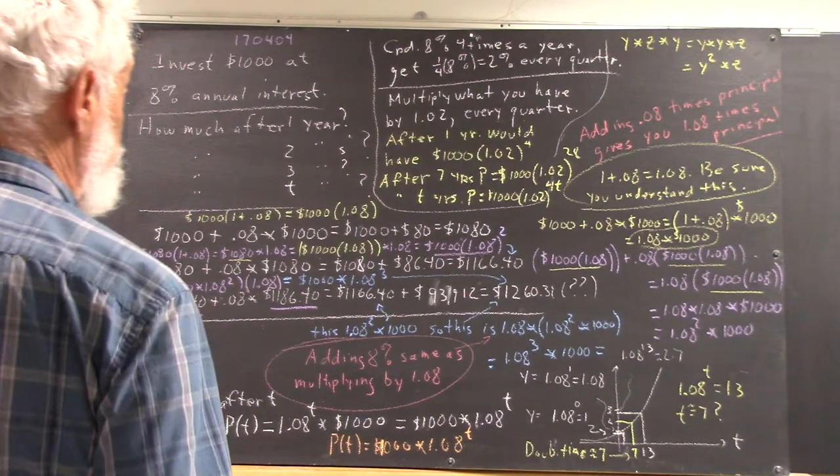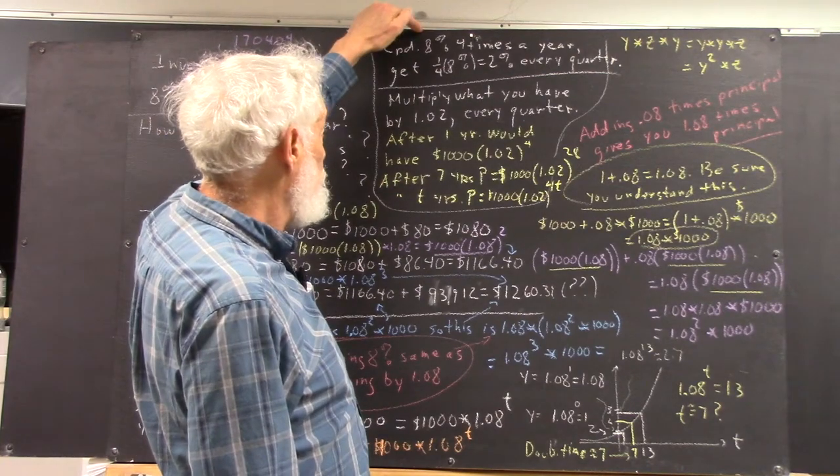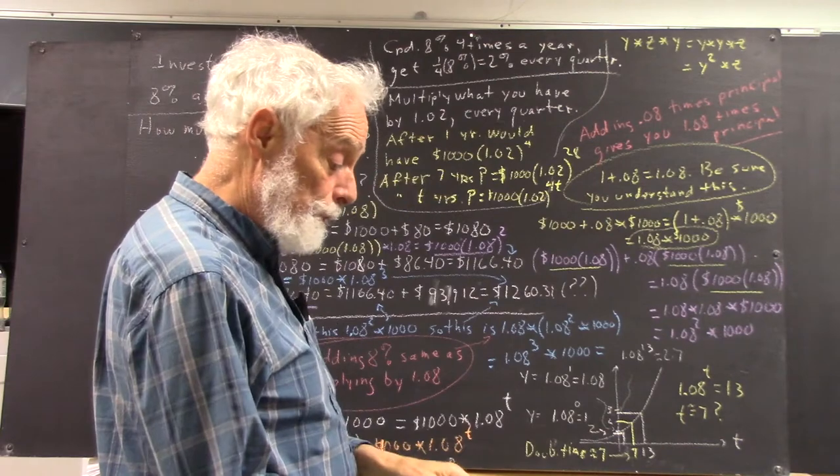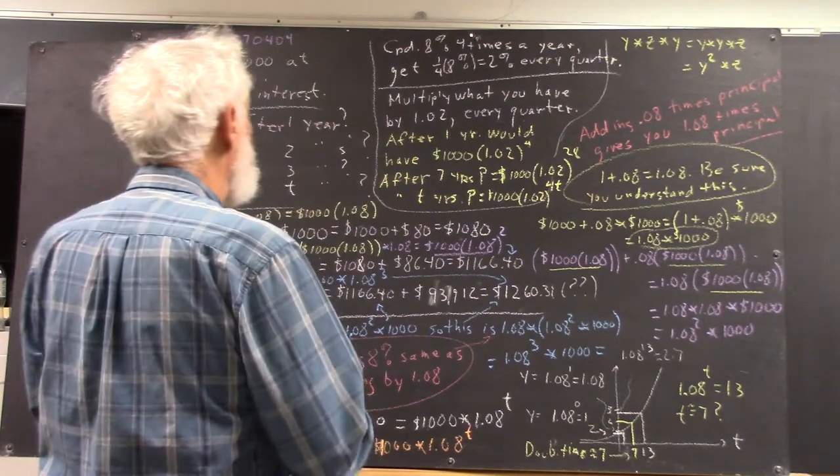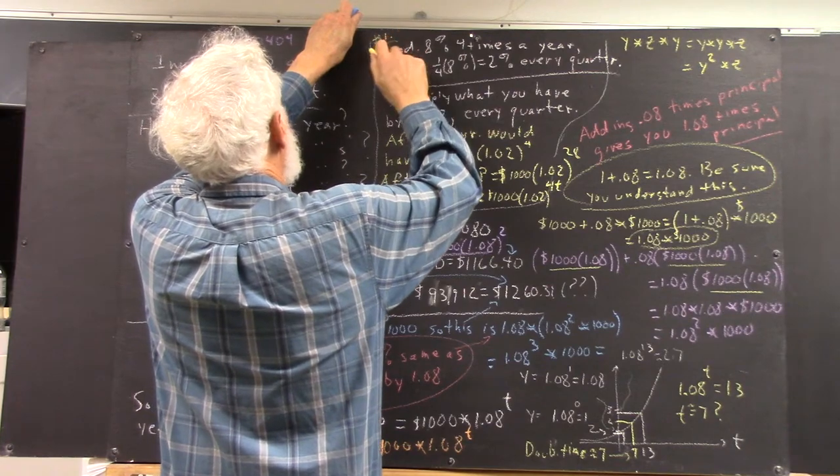Now, after all the preliminaries, we come up to the question of what happens if we compound 8% four times a year, which is problem number one now. So I can put a number one up here to compare this with the document.